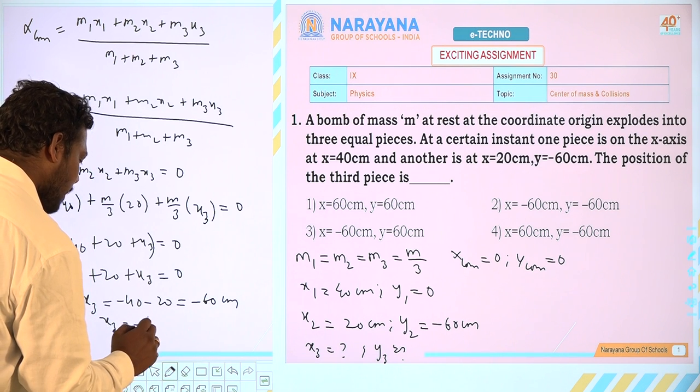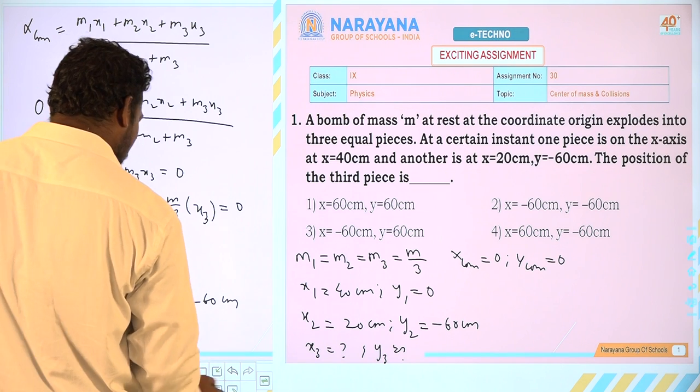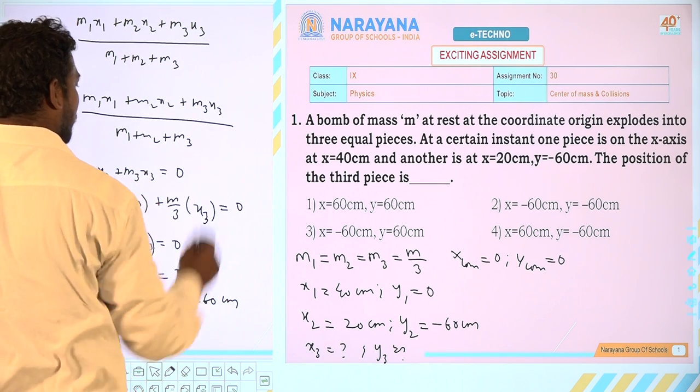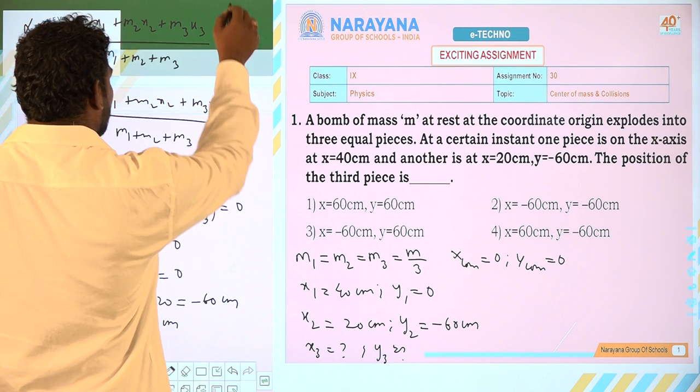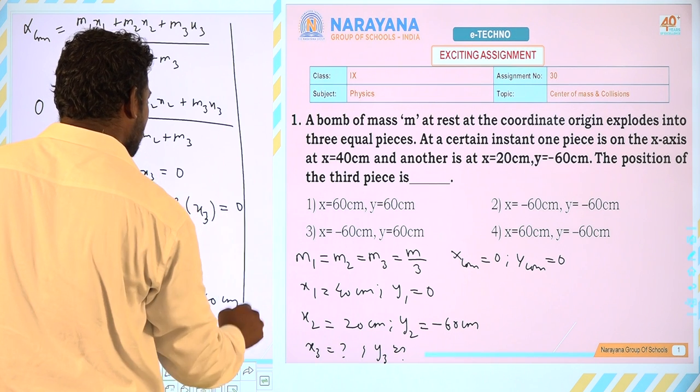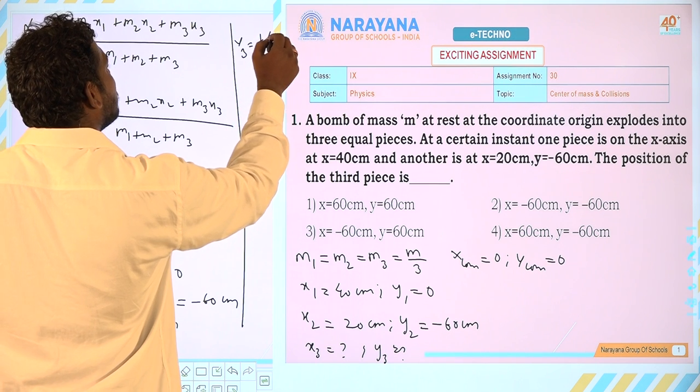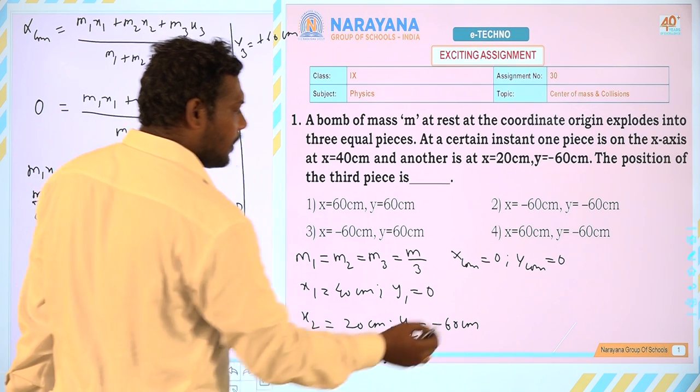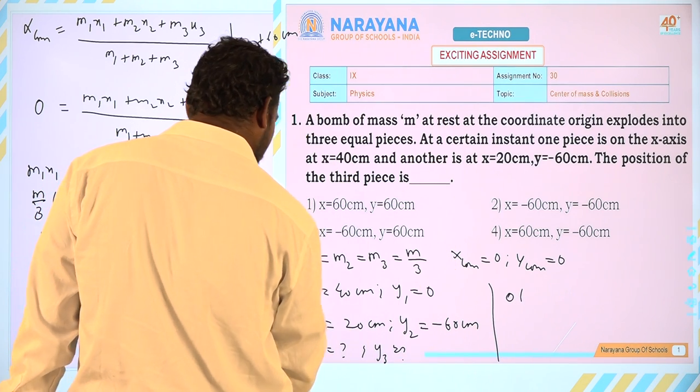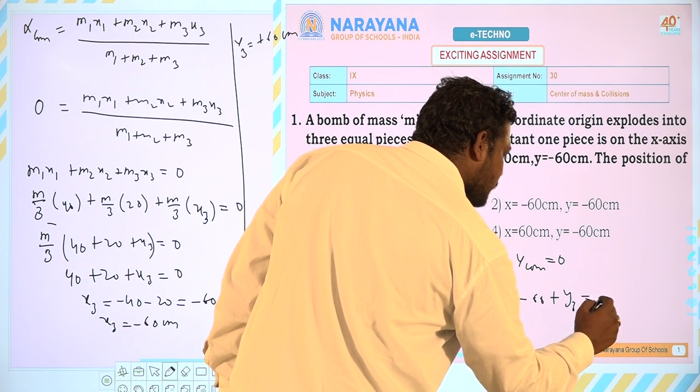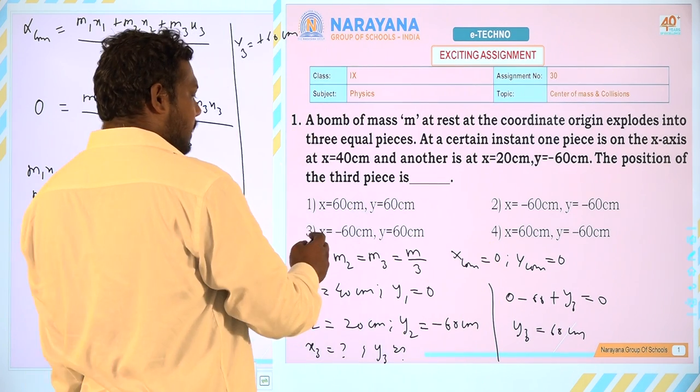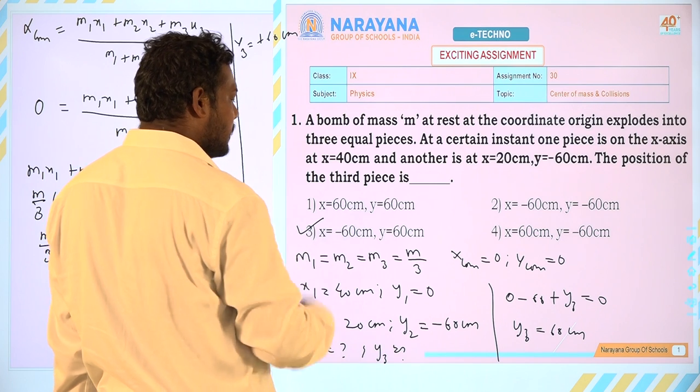So we got x3 = -60 cm. And when you continue with the same thing you will get y3 as +60 cm. So here we get the equation of 0 - 60 + y3 = 0. So y3 = 60 cm. So x3 and y3 are -60 and 60 cm.